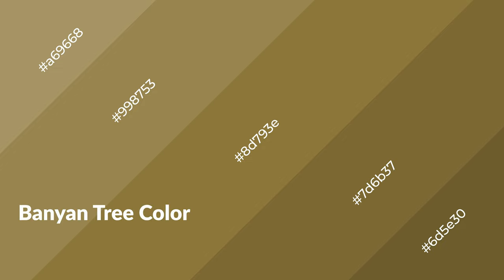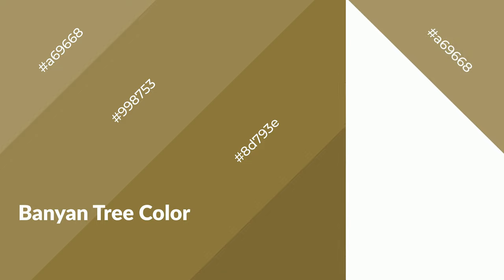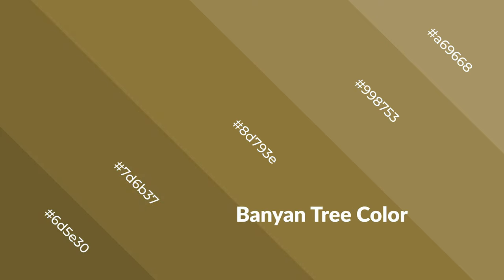Banyan tree is a warm color and it emits cozier and active emotions. Warm colors are symbols of warmth, fire, heat, and sunshine. It also evokes joy, passion, love, and even anger emotions. You can see them used in restaurants and gyms.